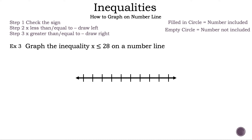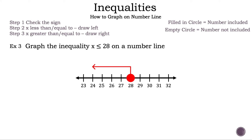Let's move on to example 3. Now let's read the question: Graph the inequality x less than or equal to 28 on a number line. We already have our number line. Let's add some numbers — just make sure 28 is on there somewhere. Now we need to circle 28. Are we going to have a filled-in circle or an empty circle? Let's write a filled-in circle, because we have less than or equal to — or specifically, or equal to. Since x is on the left side and we have less than or equal to, we draw our arrow to the left.